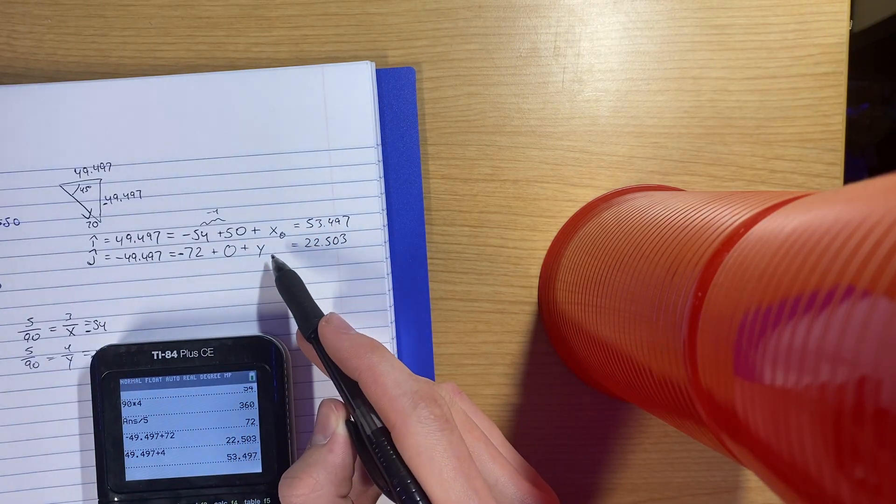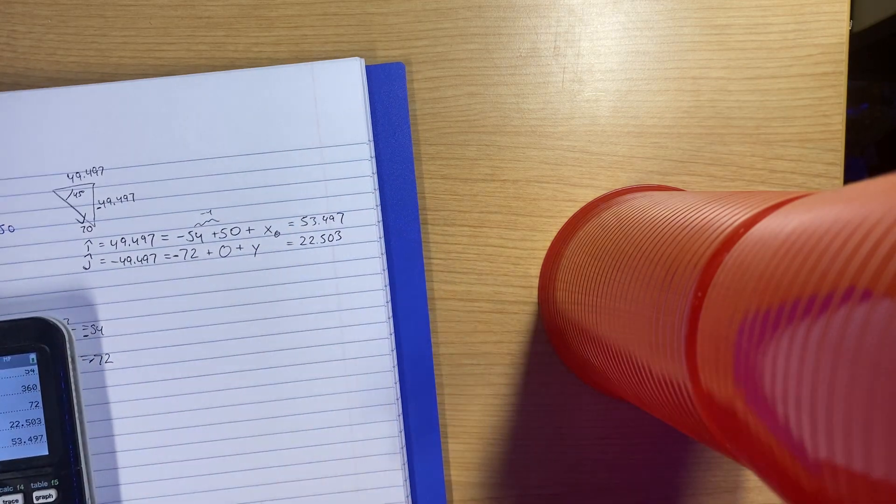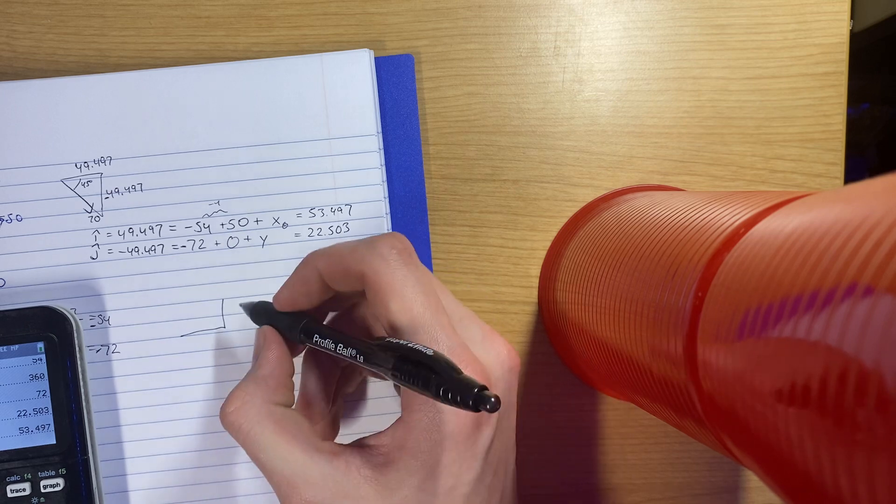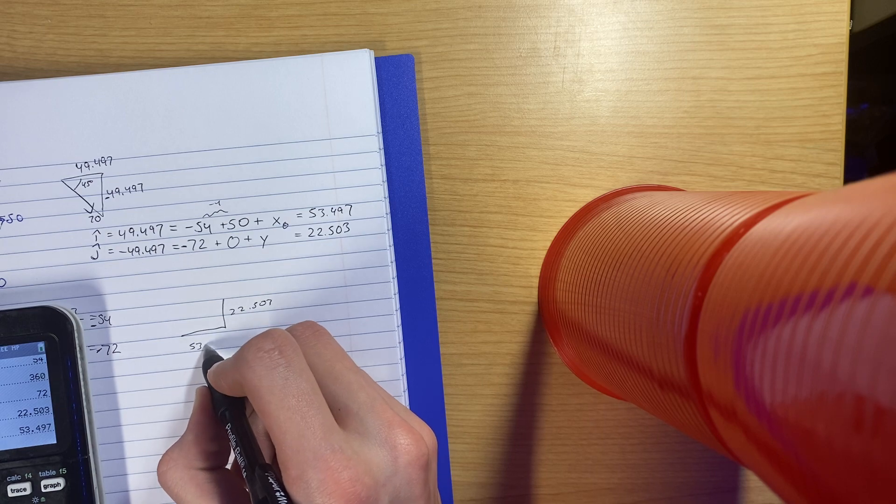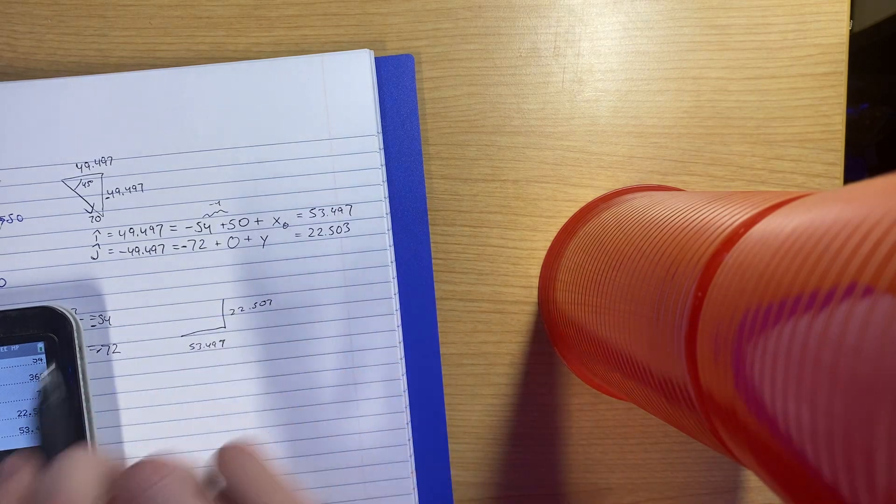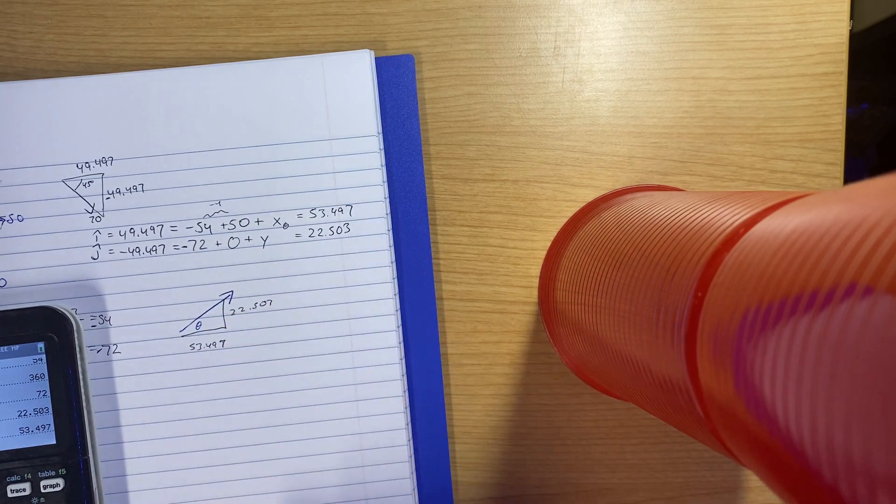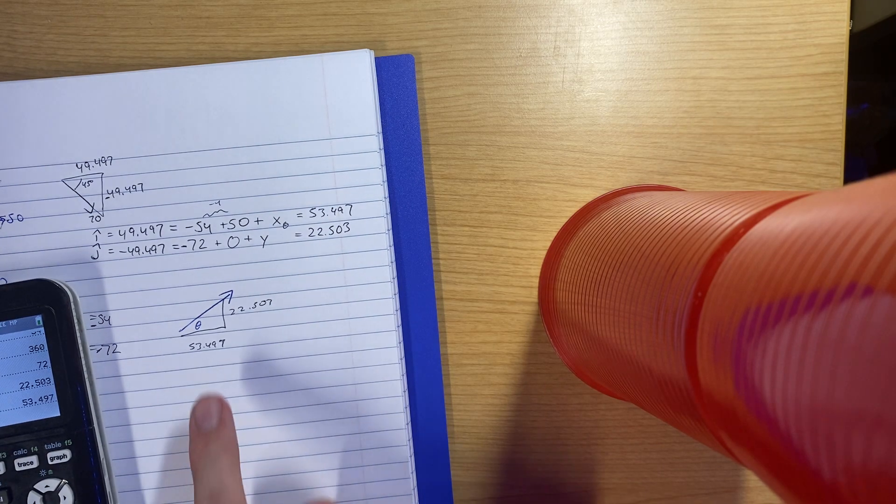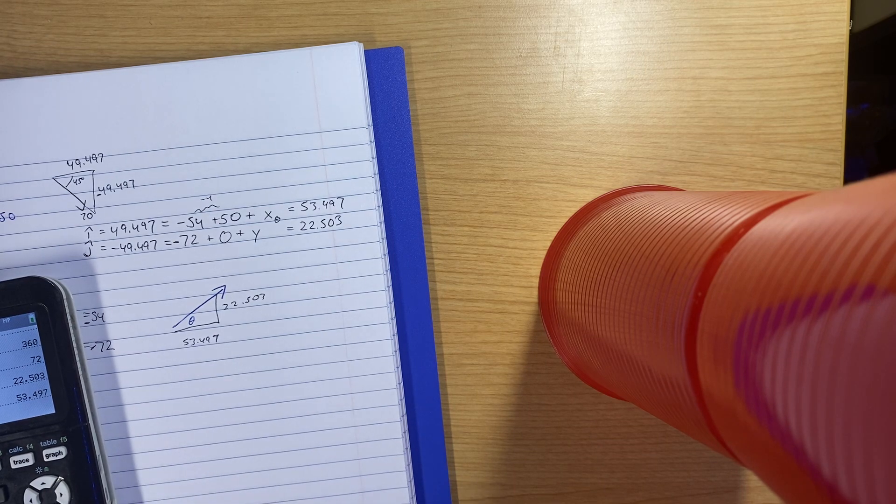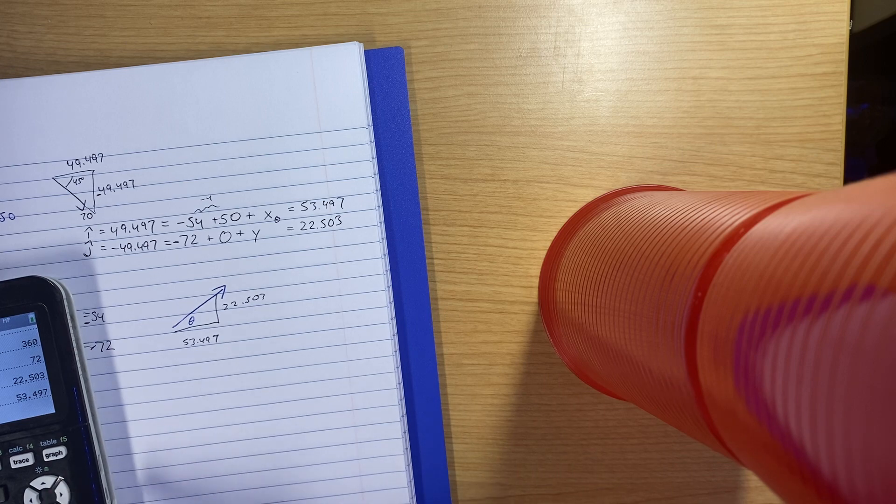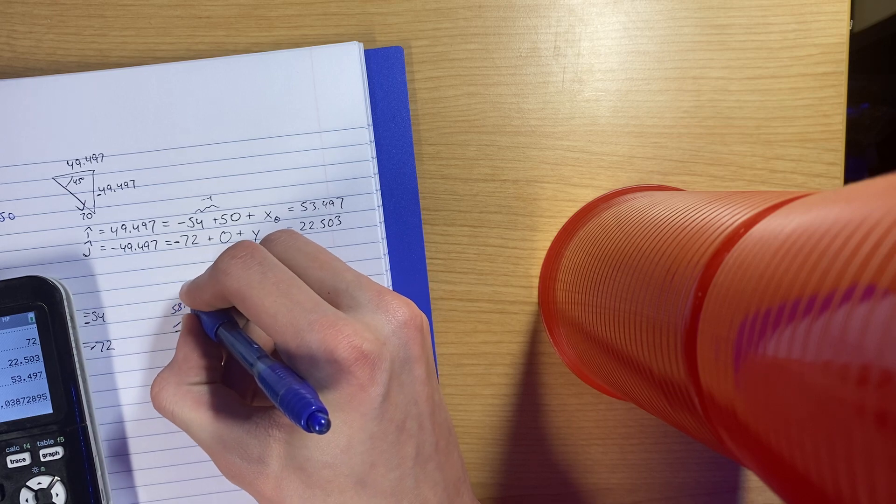This step, it's just my components and my resultant. That was the hard part of this. Because then once you get your X and Y, you see that Y is 22.503, your X is 53.497. Then all the problem's actually asking you for is that. And then your angle again. So then that one's just your square root, this squared plus this squared.